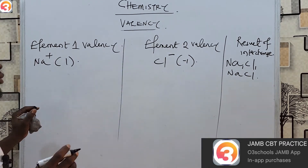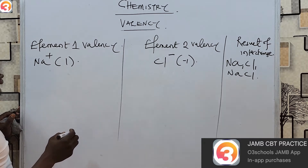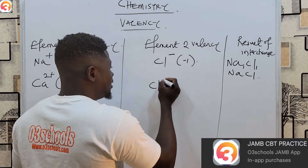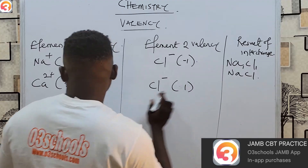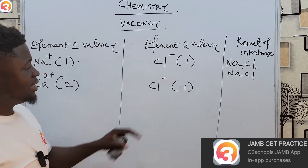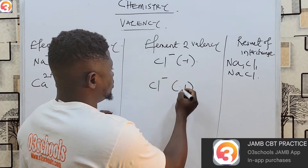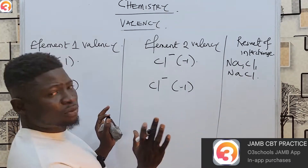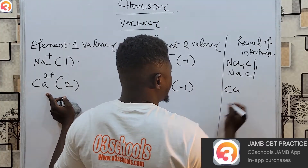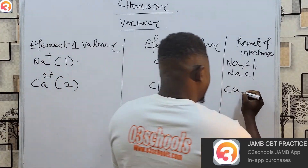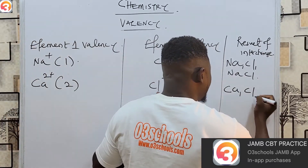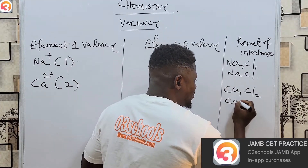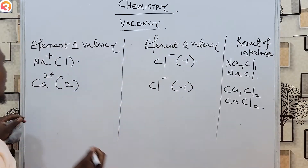Let's take another example. Calcium (Ca²⁺) has valency two, and chlorine (Cl⁻) has valency one. Interchanging the valencies: Ca gets subscript one, and Cl gets subscript two, giving the formula CaCl₂. It is as simple as that.